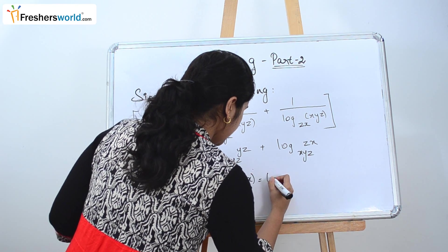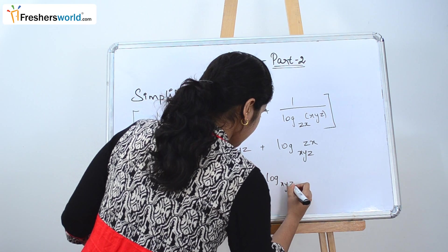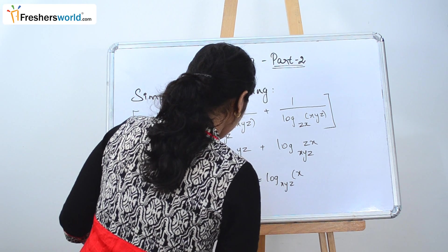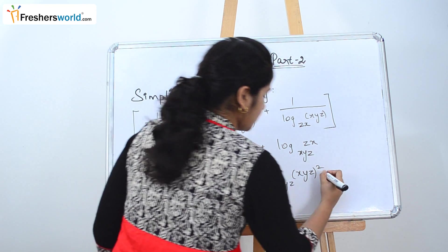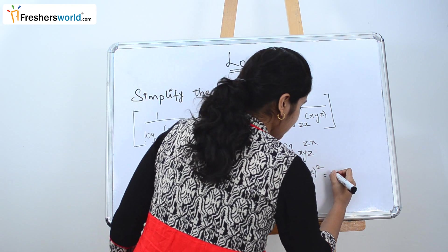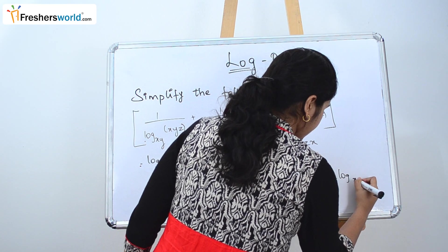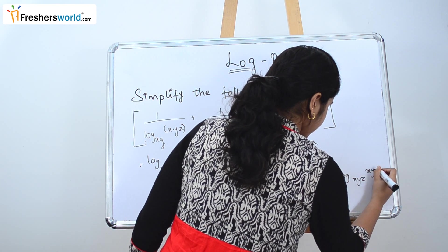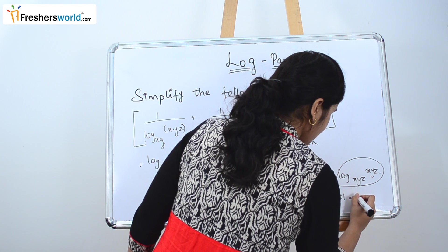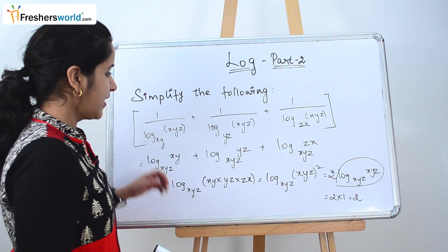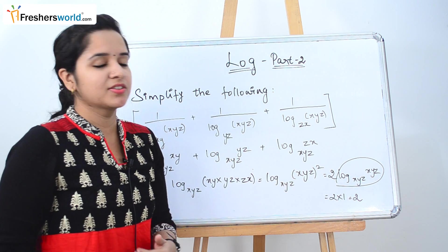How this can be written as log_xyz[(xyz)²]. So this can be rewritten as the power can be taken here. So 2 log_xyz(xyz). So this is nothing but 1. So 2×1 is equal to 2. So once we simplify the problem that they have given, the answer that we arrive at is 2.